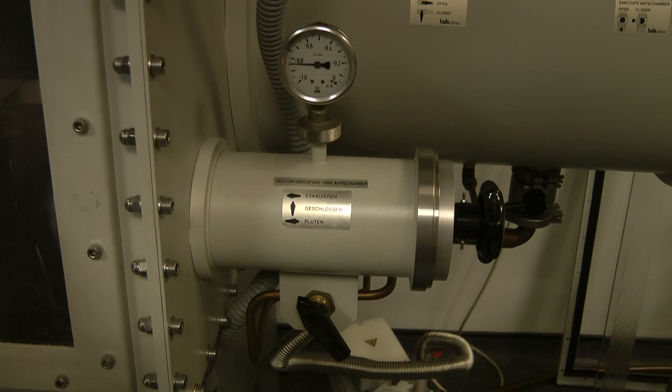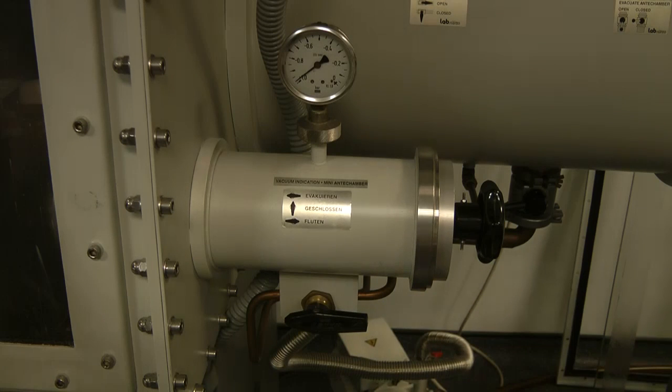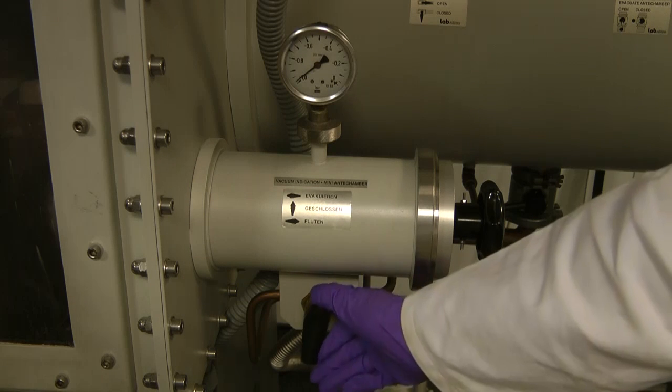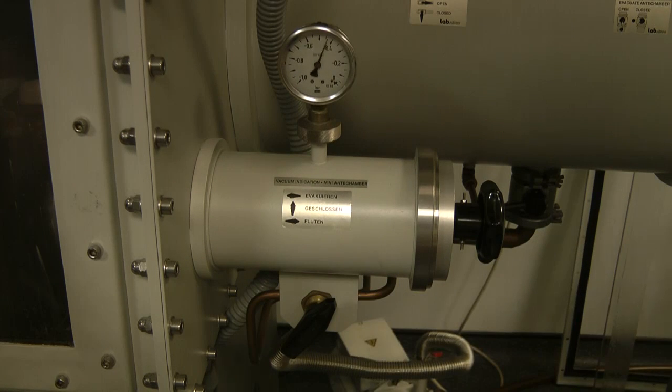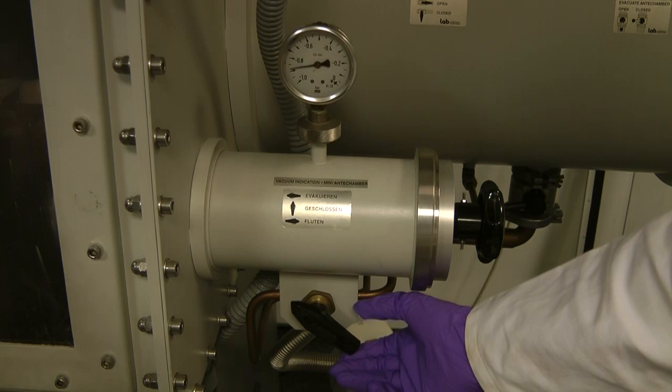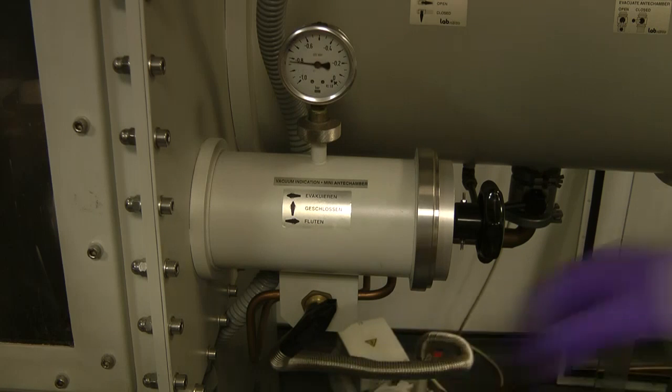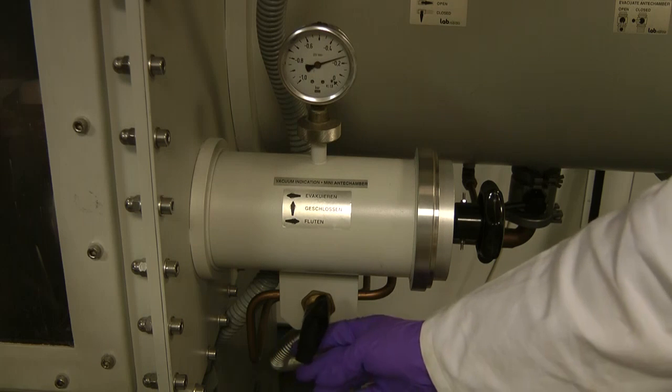Wait until the anti-chamber is fully depressurized, and then refill to about halfway. Repeat this process three times before finally filling it back up to room pressure. Each time you put the anti-chamber under vacuum, it's probably a good idea to leave it for about five minutes.